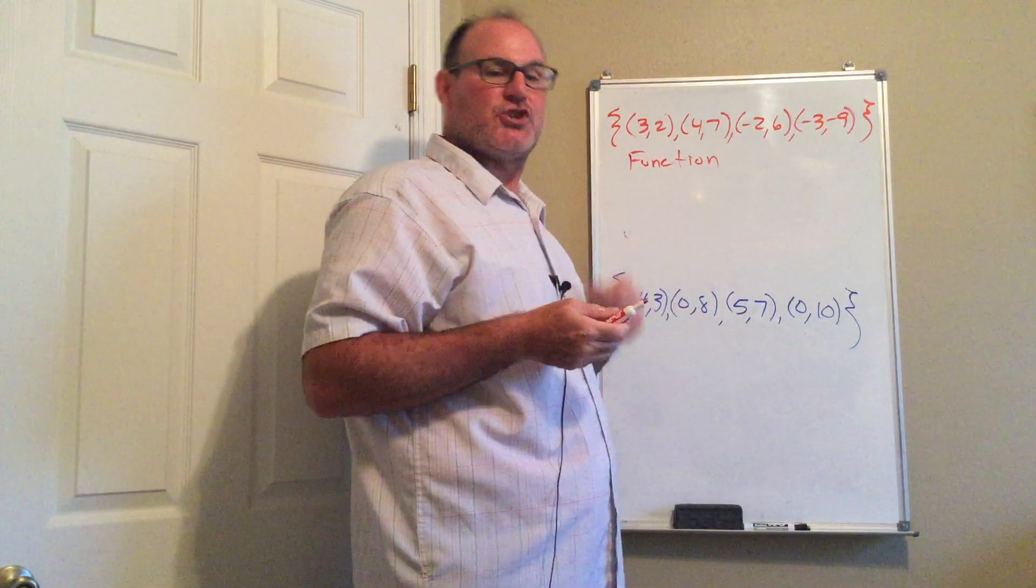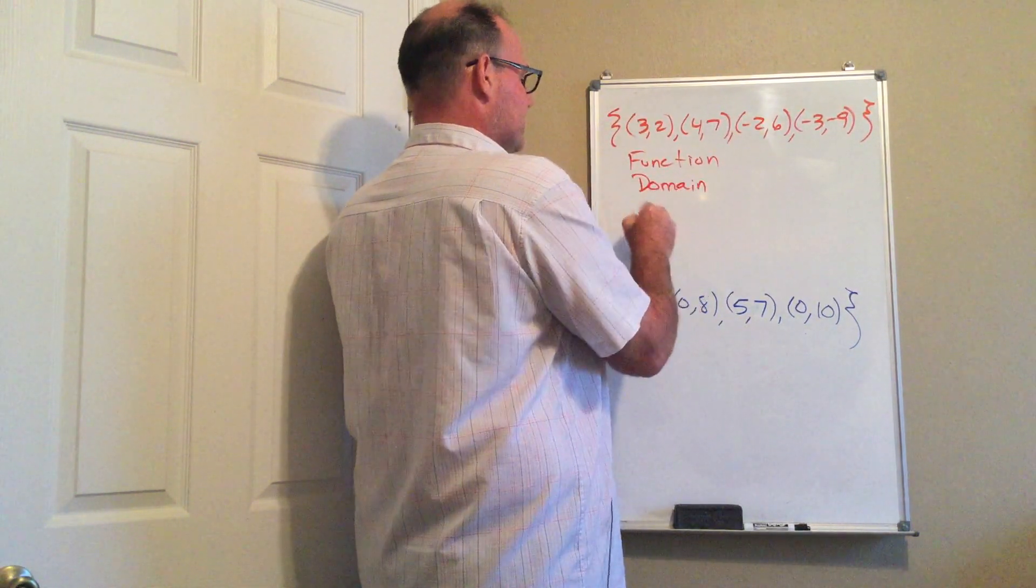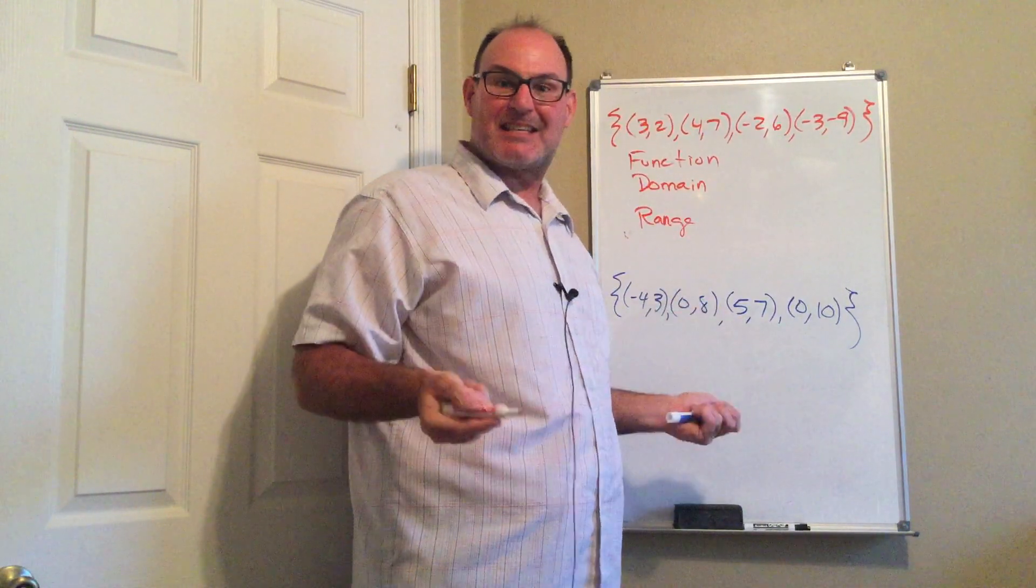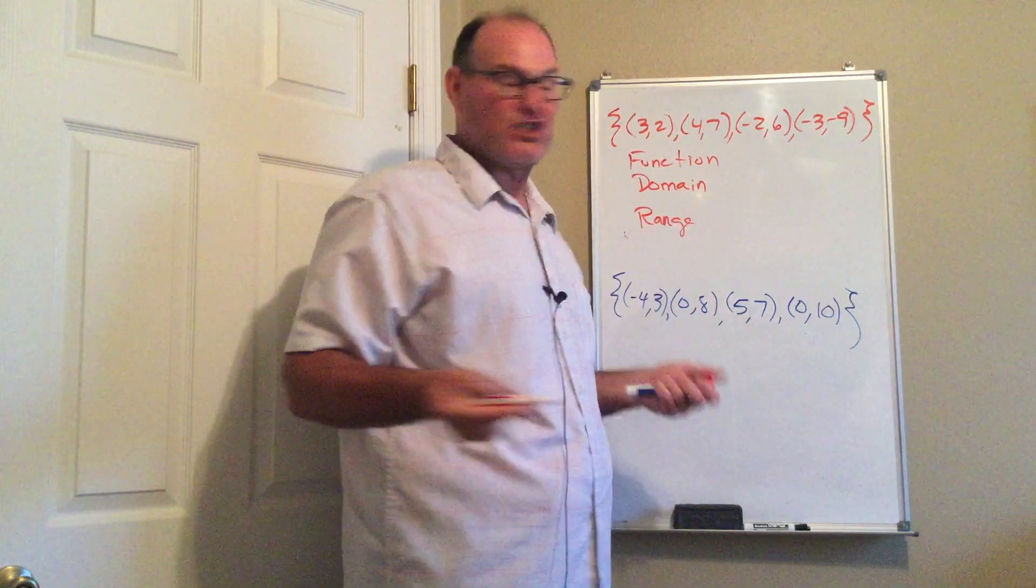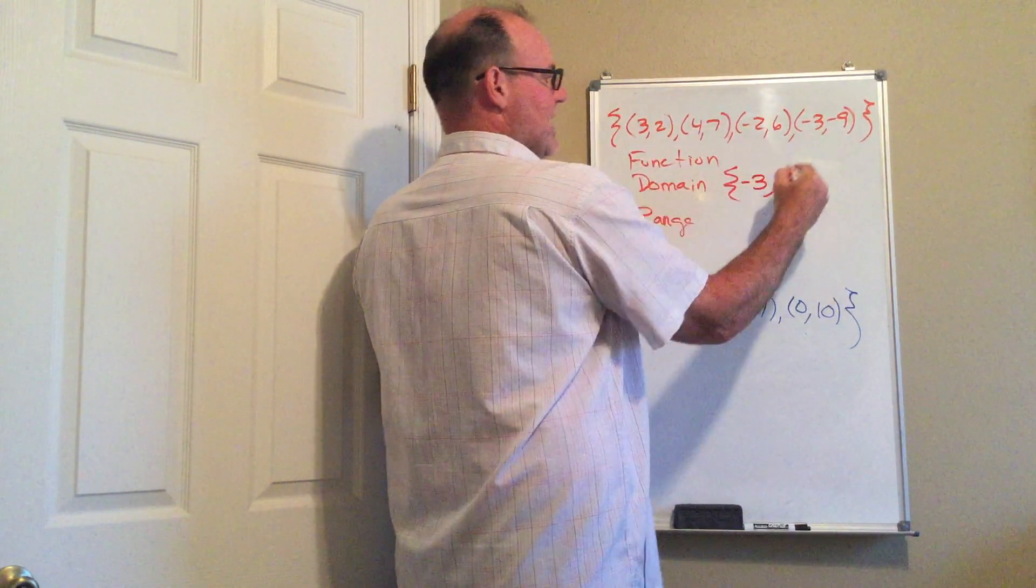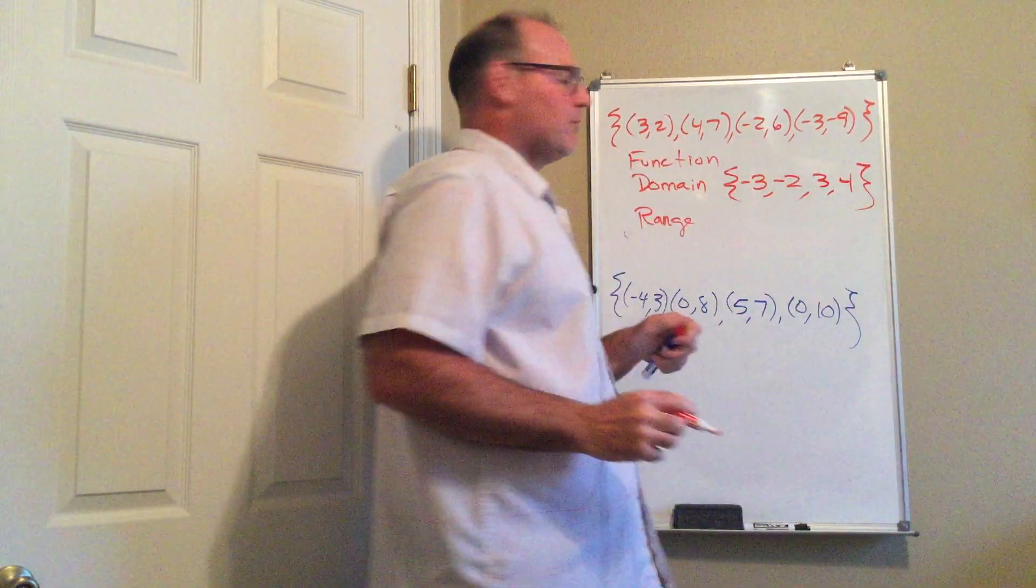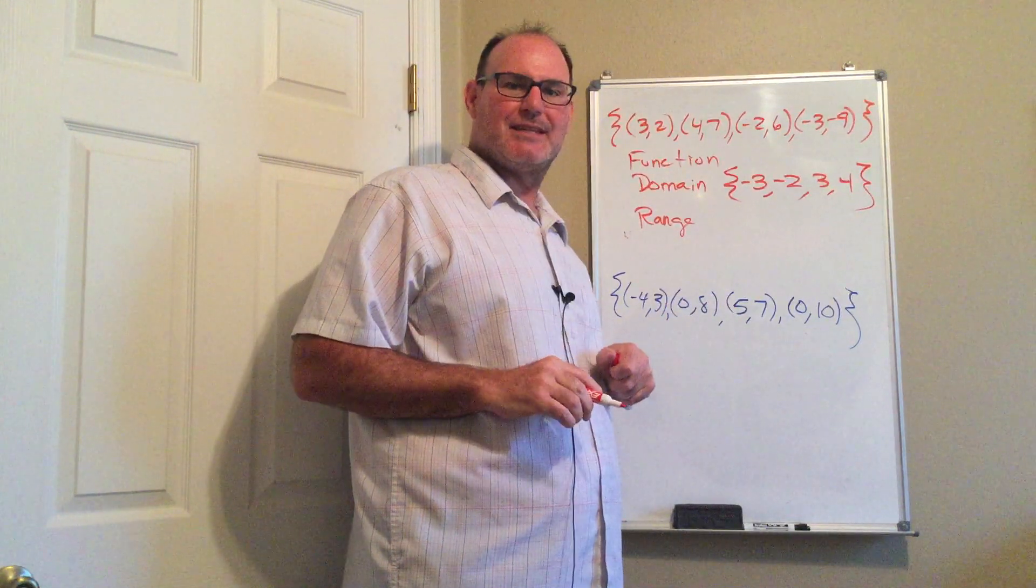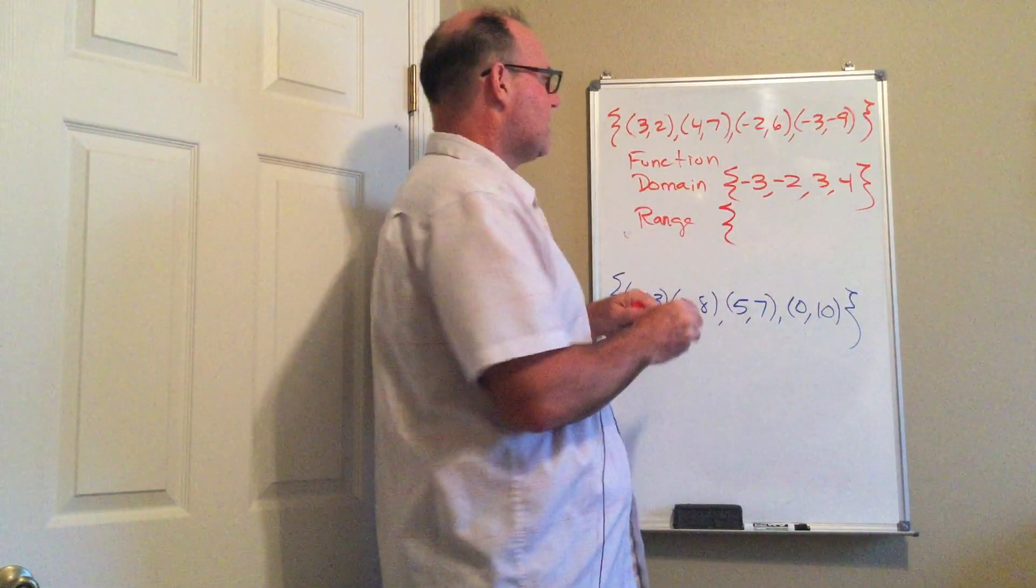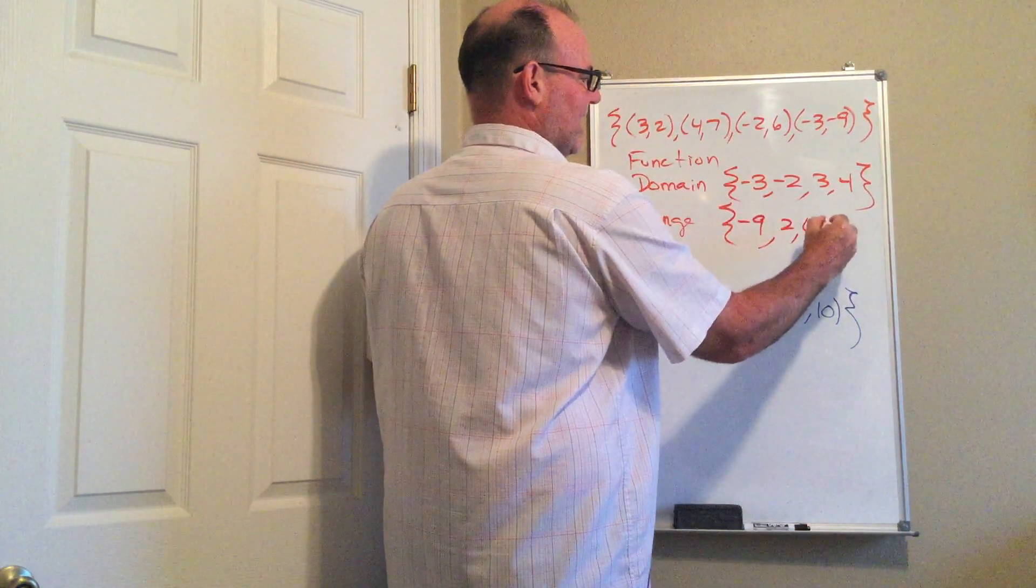Now, of this function, there's two component parts. There is the domain, and there is the range. The domain is the set of x values for your relation. So in this case, the domain is {-3, -2, 3, 4}. Always try to list your sets in number order. The range is the set of y values. So the y values here are {9, 2, 6, 7}.